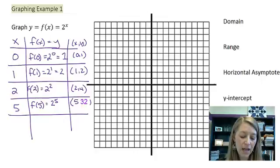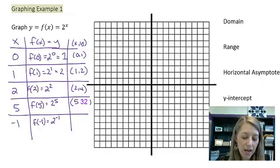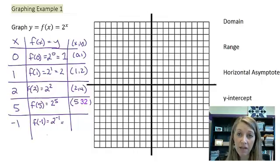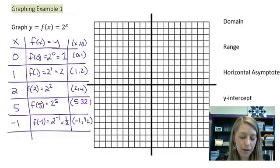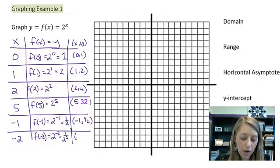What if I picked negative values, like negative 1? That gives me f of negative 1 is 2 to the negative 1st power. Hopefully remember, if you have negative in the exponents, that means you flip your fraction because you have a bad attitude. So that's going to be 1 half. Negative 2 gives me 2 to the negative 2 is 1 over 2 squared, or that gives me 1 fourth.